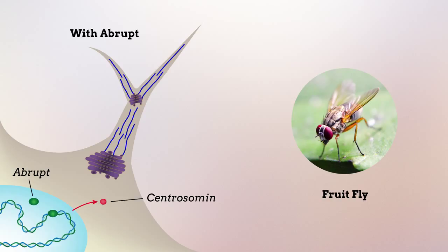Within the dendritic tree, centrosomin clustered along dendritic branches, especially at branch points and at the tips of branches. At these sites, centrosomin bound to the Golgi apparatus, which acts as the foundation for the microtubule network.